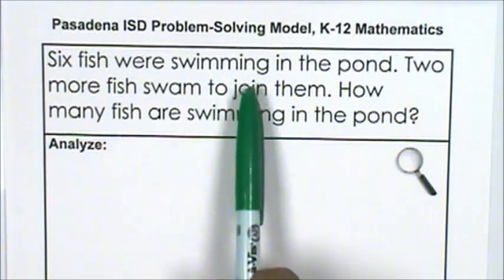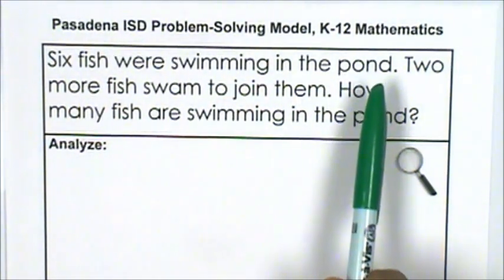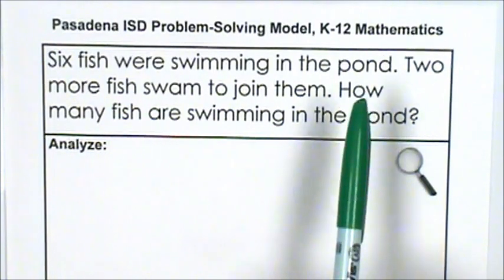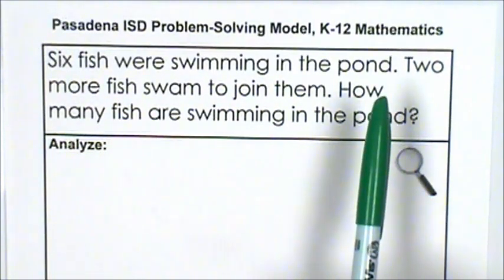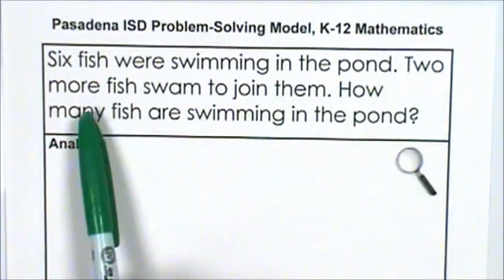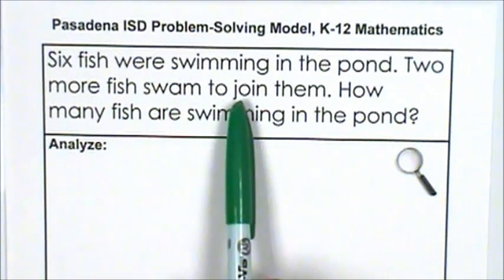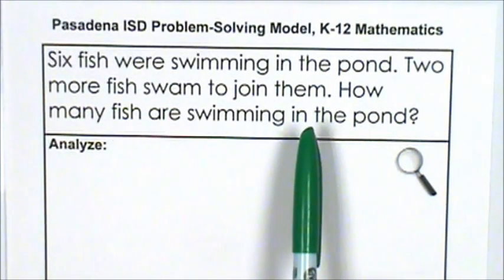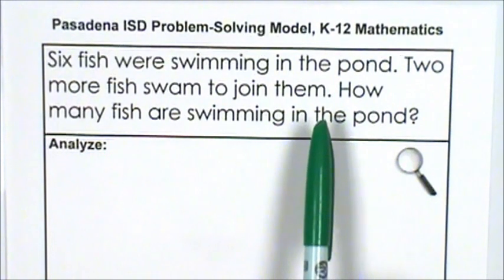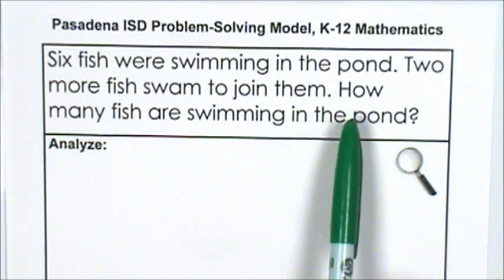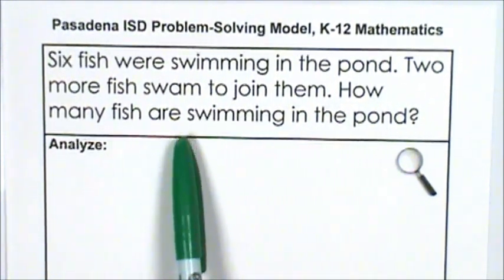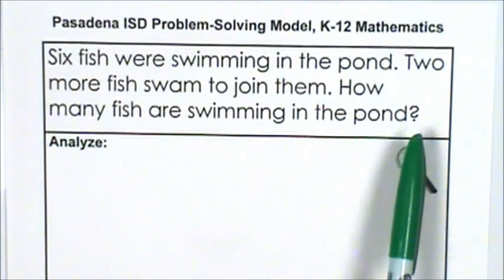Six fish were swimming in the pond. I can see six fish swimming around and around and around. Two more fish swam to join them. Oh, so two more fish started swimming too. How many fish are swimming in the pond?